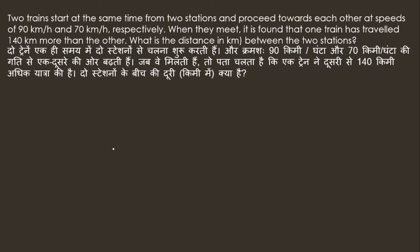Two trains start at the same time at 90 km per hour and 70 km per hour. When they meet, one train has travelled 140 km more than the other. What is the distance between the two stations?